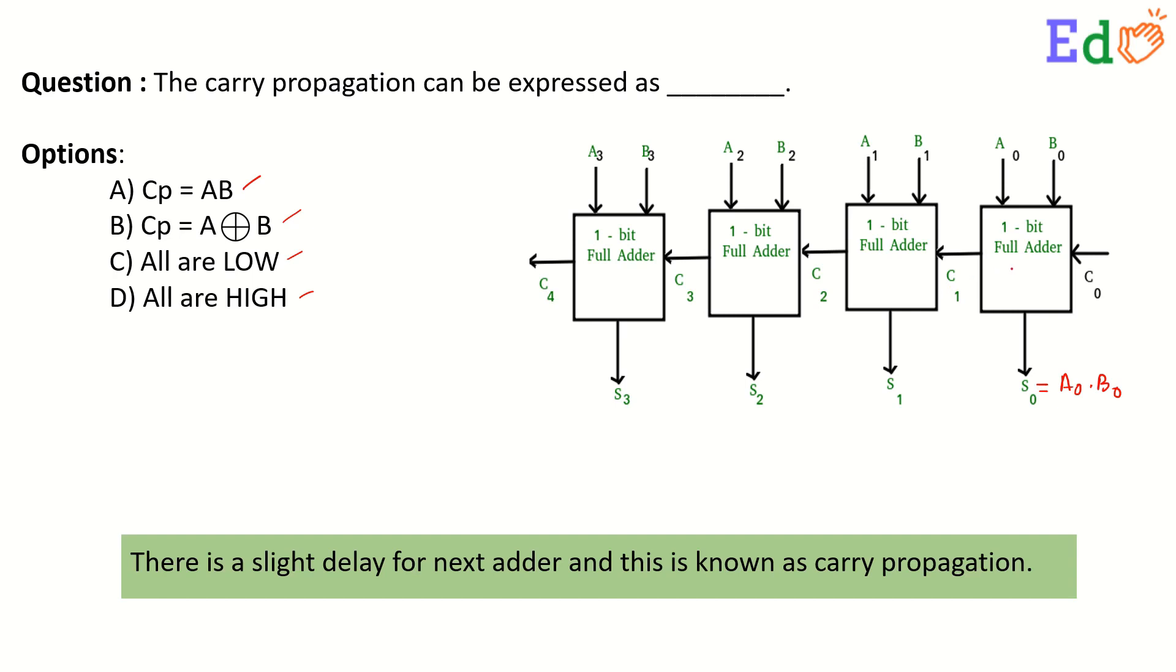And the carry C1 which comes out from the first adder can be obtained like C1 = A0 XOR B0. And it passes on to the next adder, for which it has to wait to generate the next addition part.